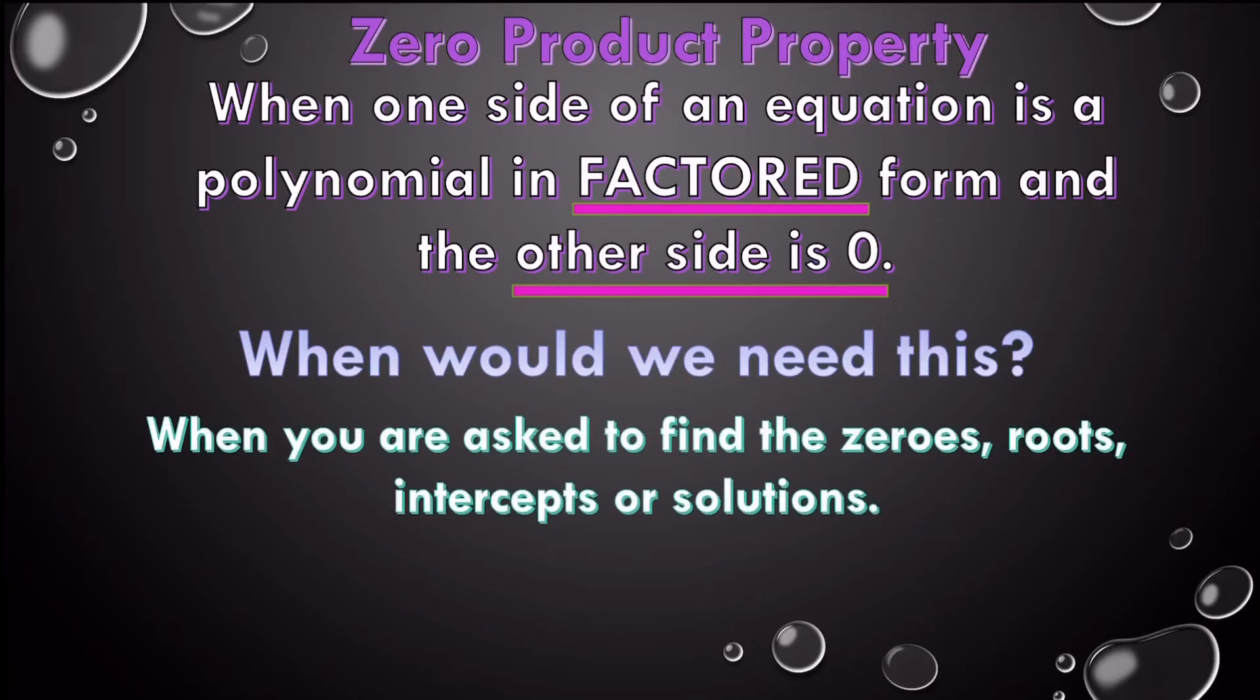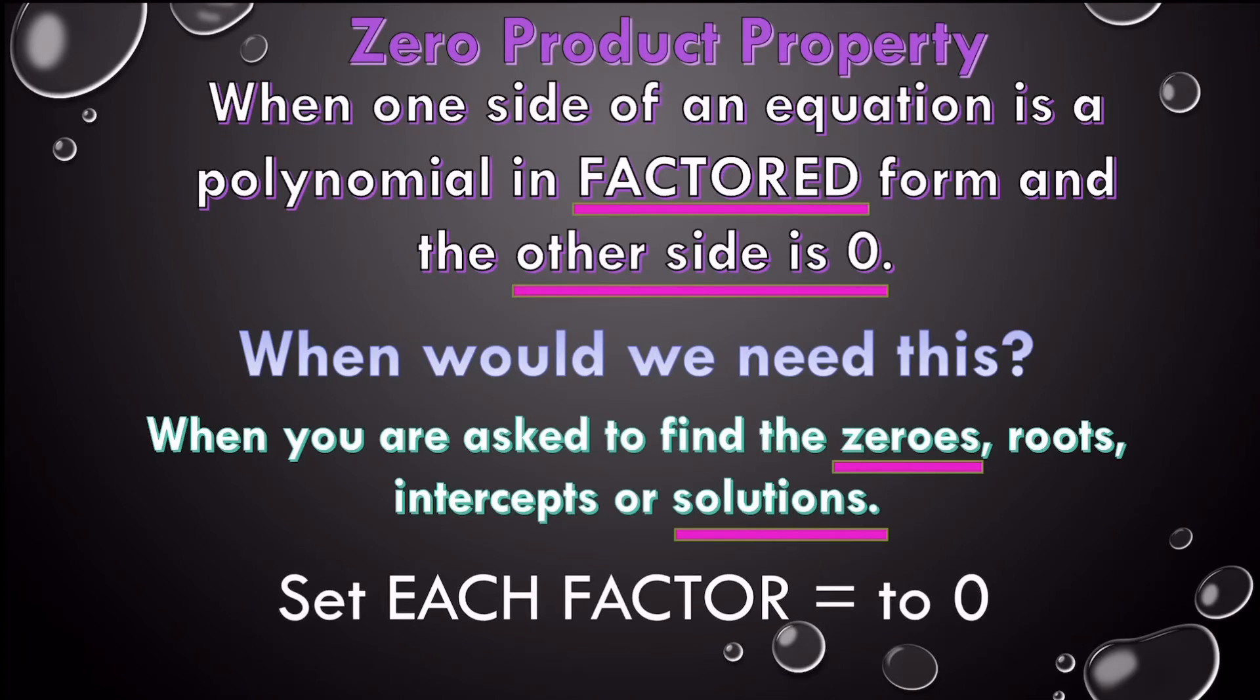Well, it's important because we might be asked to find the zeros, hence why it is called the zero product. Zeros are also known as roots, intercepts, or solutions. So when you're asked to find the solutions, you're finding the zeros. You're finding what value will make that equal zero. So we do this by setting each factor equal to zero. Every factor in the problem has to equal zero.